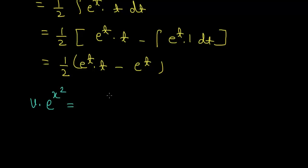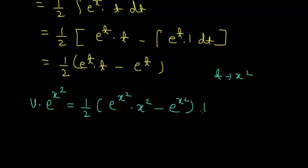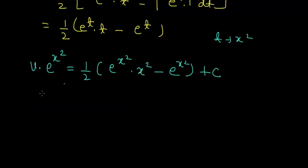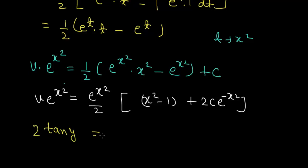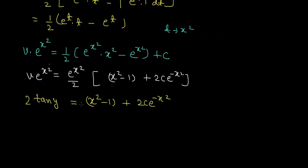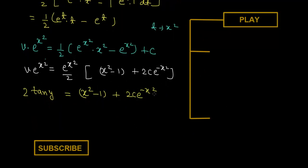Substituting back t = x² into the solution v·e^(x²) = (1/2)[e^(x²)·x² − e^(x²)] + C. Taking e^(x²)/2 as common gives v = (x² − 1)/2 + 2C·e^(−x²). Replacing v = tan y, the answer is 2 tan y = x² − 1 + 2C·e^(−x²).